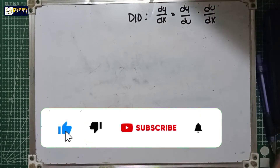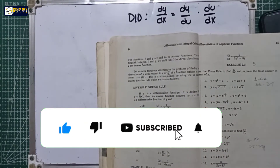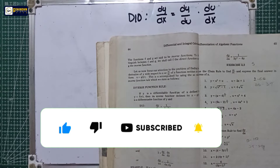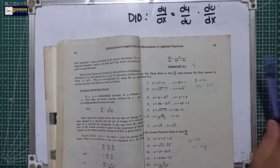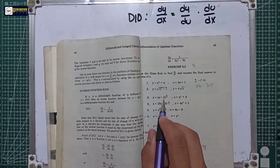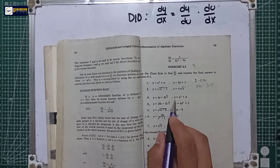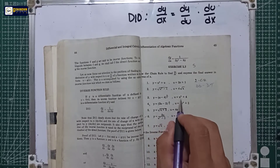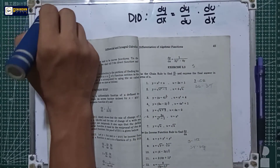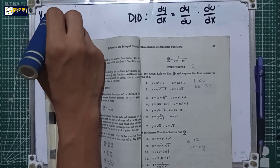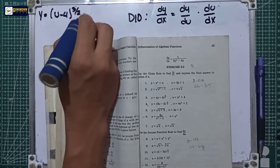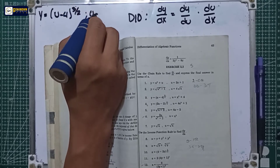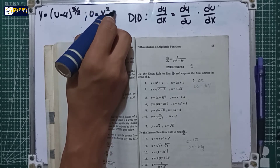We are now on the third problem of the chain rule, under Exercise 2.3. In problem number three, we have the equation y is equal to u minus 4 raised to 3 over 2, and for the u equation we have u is equal to x squared plus 4.